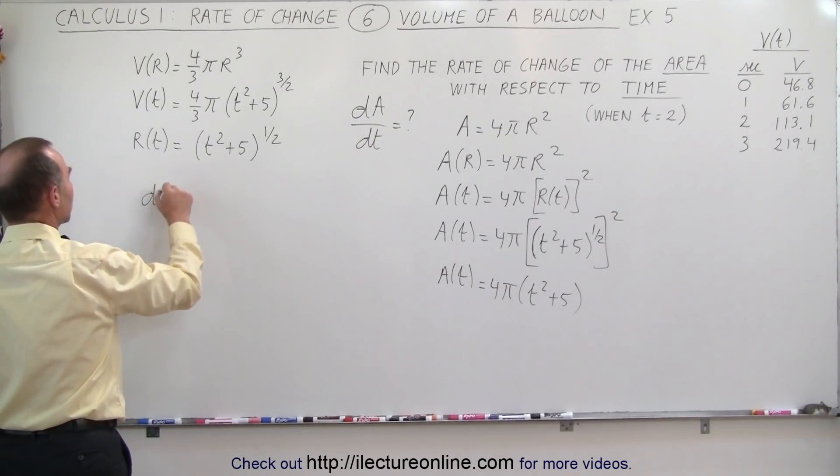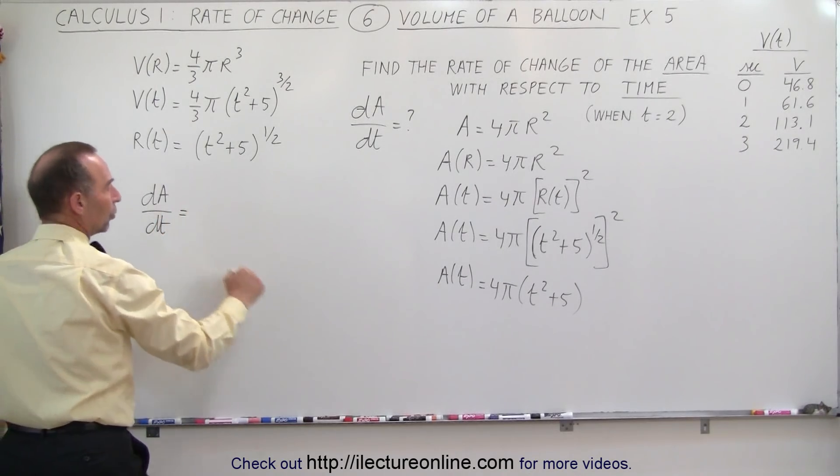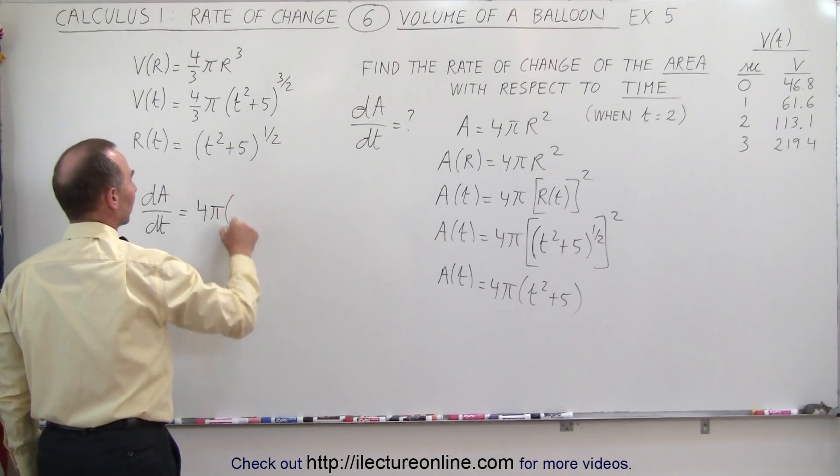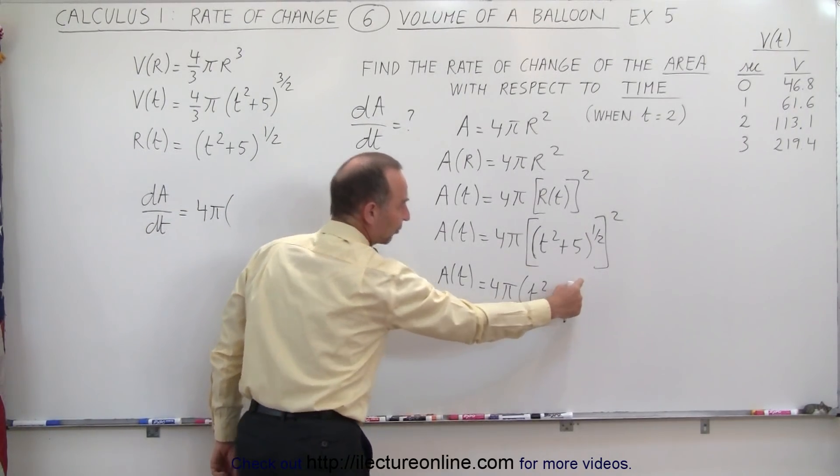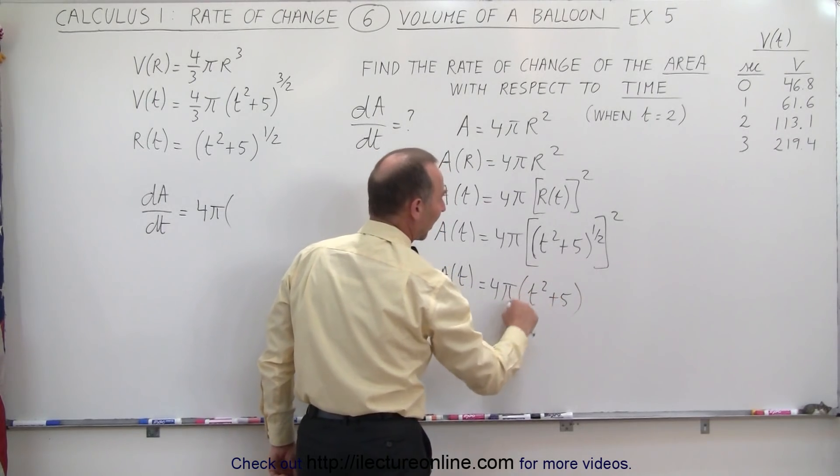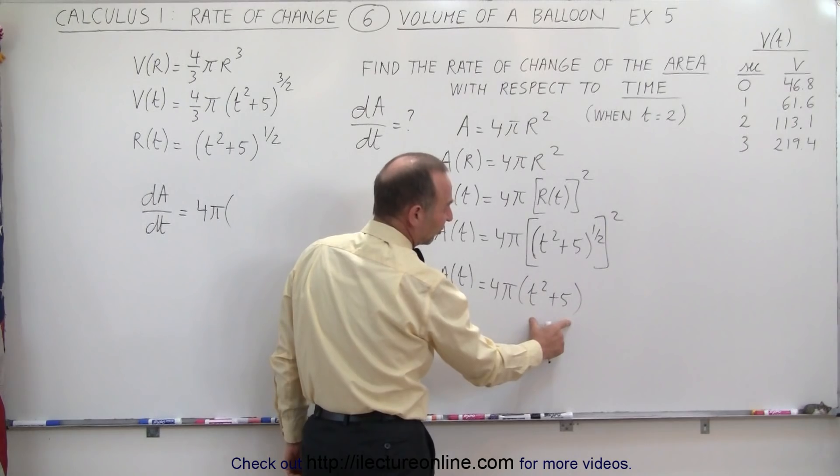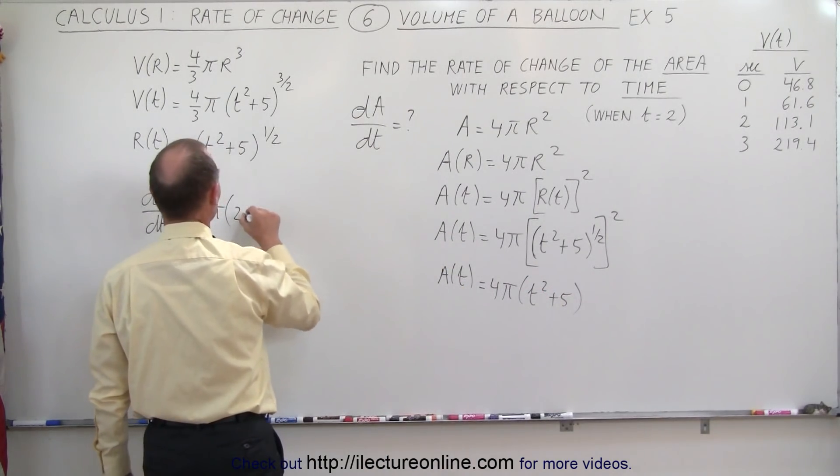So here we come, dA/dt, which is equal to the derivative of this, which is 4π, times the derivative of what's inside here, because this is to the first power, so this really would become 1 times this to the 0 power, and anything to the 0 power is equal to 1. So we simply get 1 times the derivative of what's inside, which is times 2t.